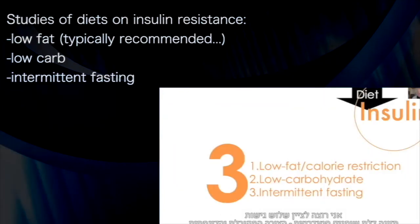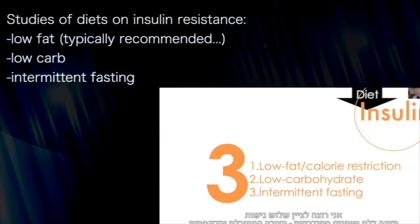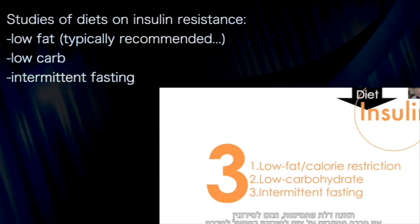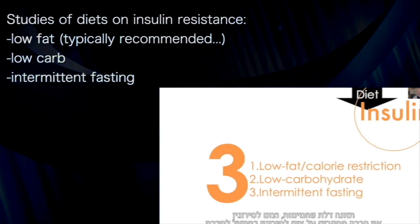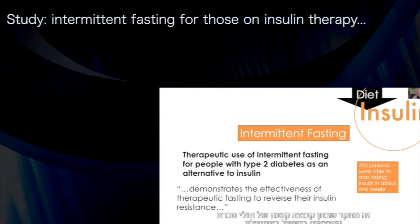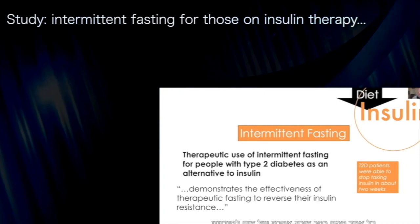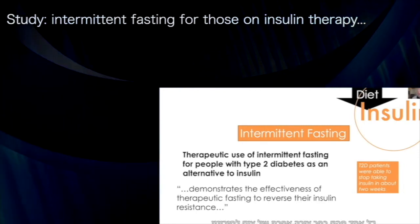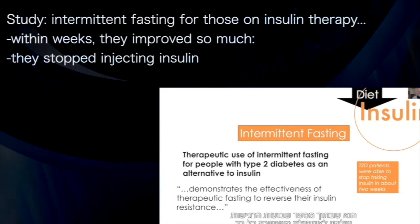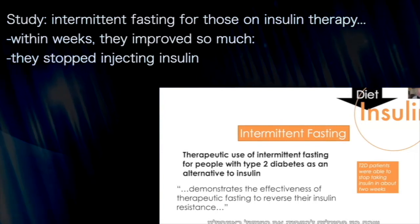I want to highlight three dietary approaches: typical low-fat diets, low-carbohydrate diets, and intermittent fasting. There was a study looking at a small cohort of people with type 2 diabetes who were on insulin therapy, and they each chose a different form of intermittent fasting. Within just weeks, their insulin sensitivity had improved so much that they were able to stop insulin therapy.